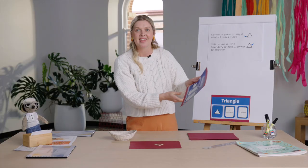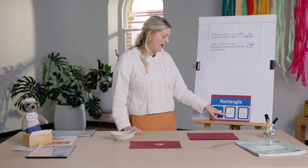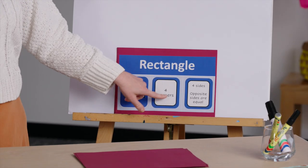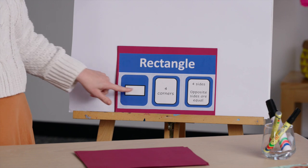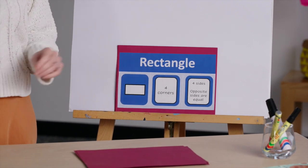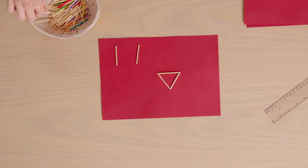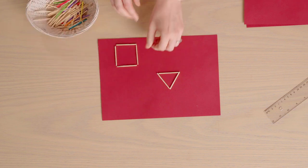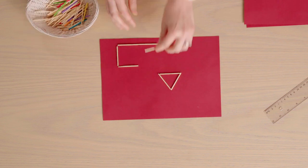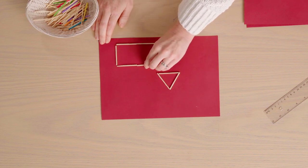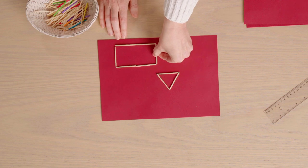Let's make another shape — a rectangle. We know that rectangles have four corners and four sides, but with rectangles the opposite sides are equal, and two sides are shorter and two sides are longer. If I was to just use four matchsticks it's not looking like a rectangle, so I'm going to join two matchsticks together to make my two longer sides, and then these ones here are going to be my shorter sides.